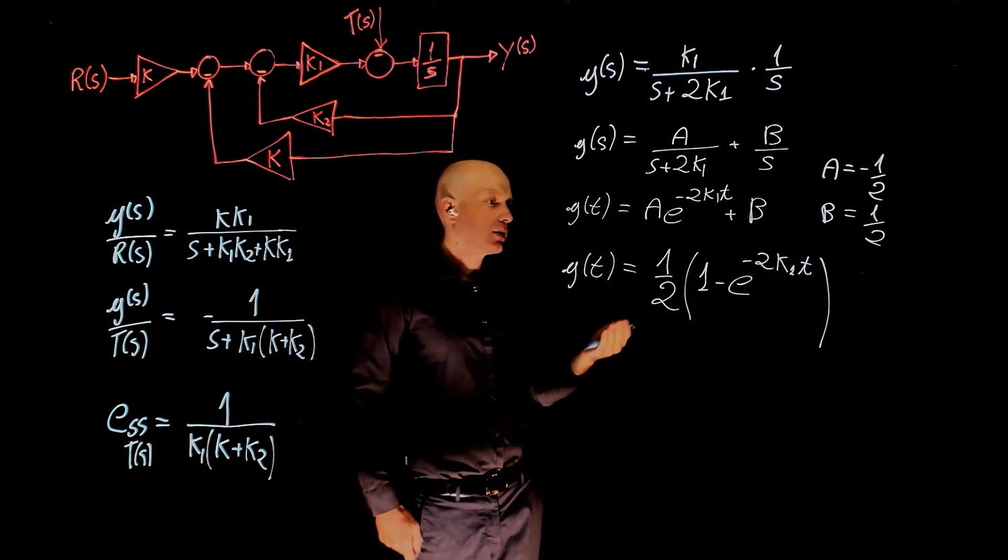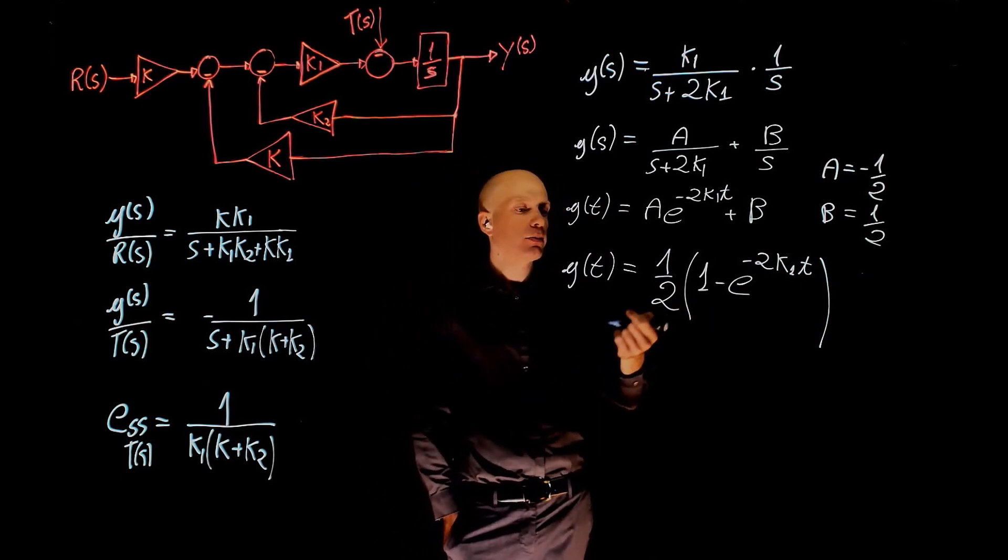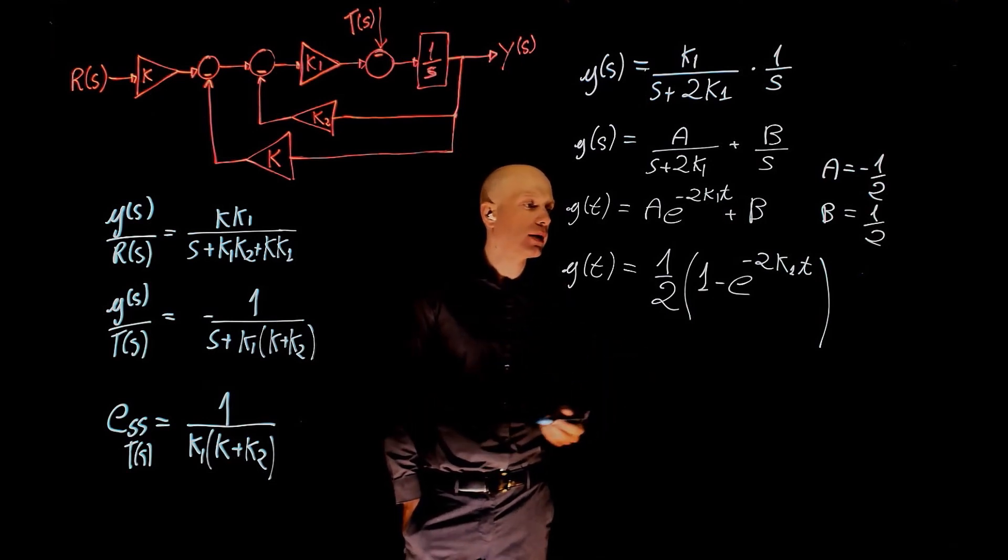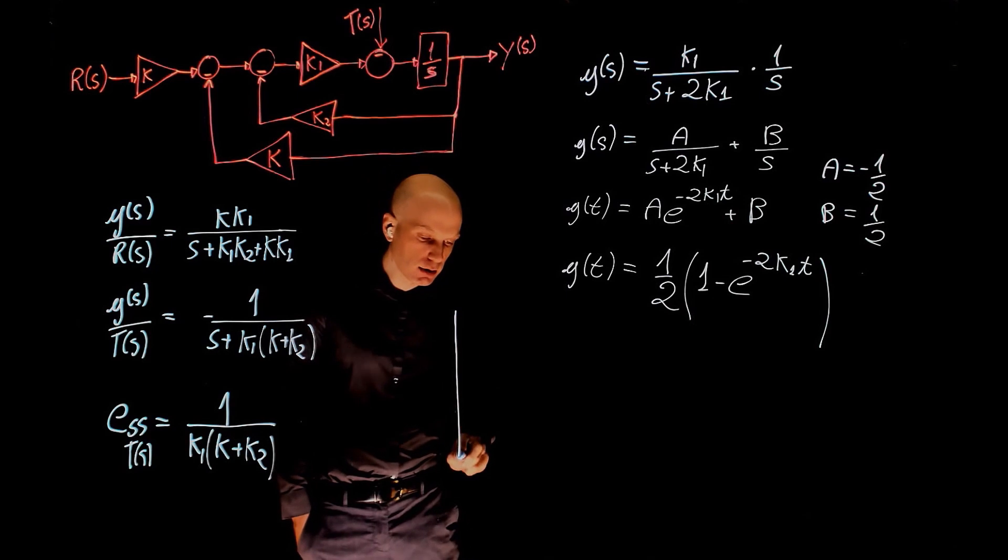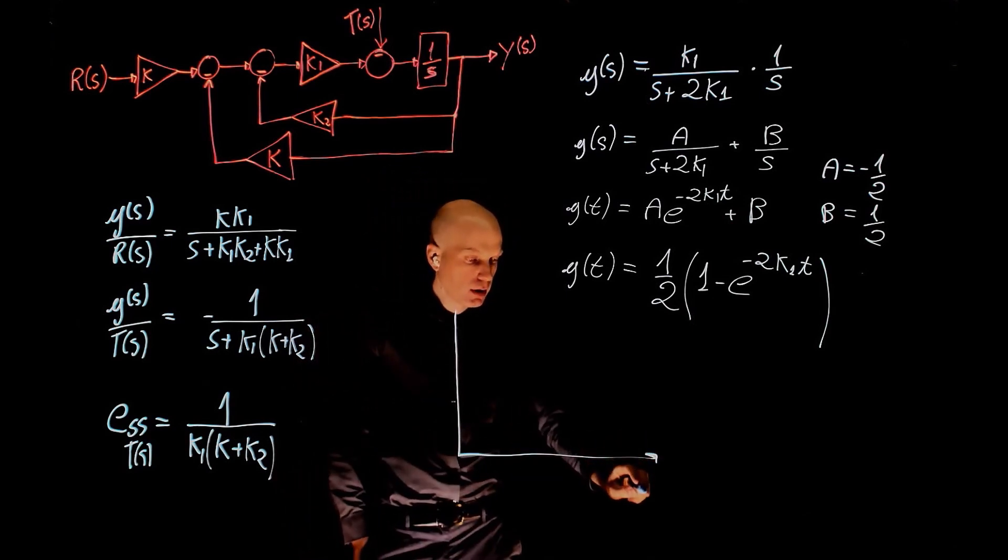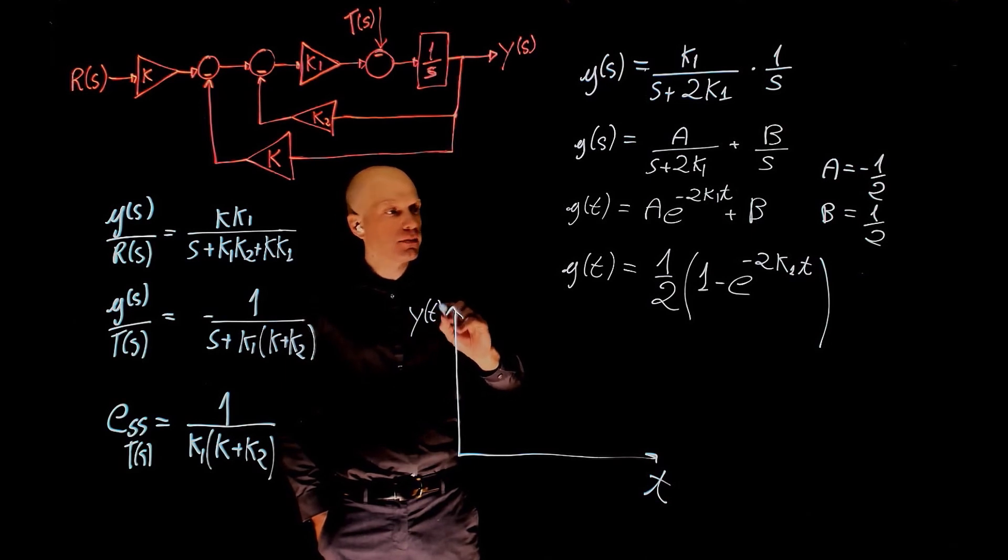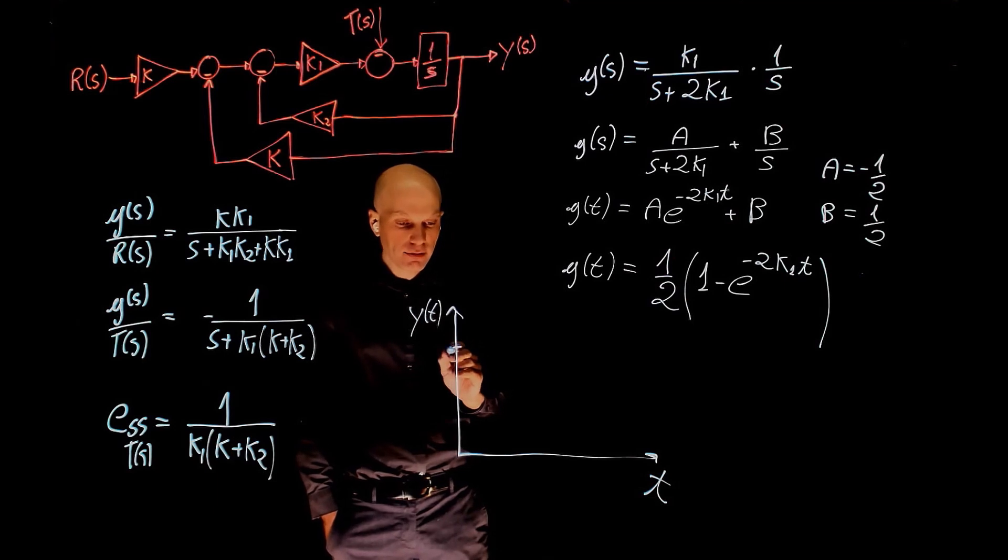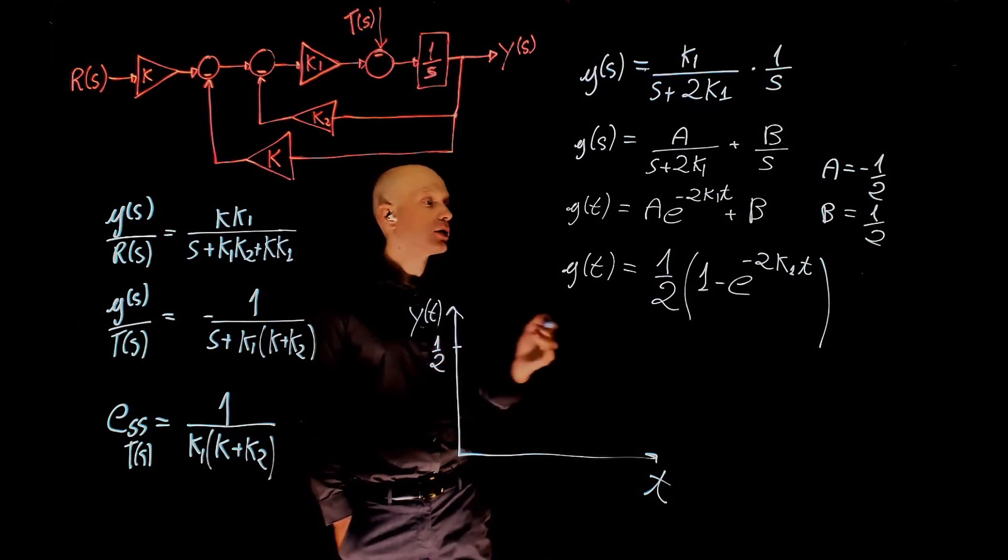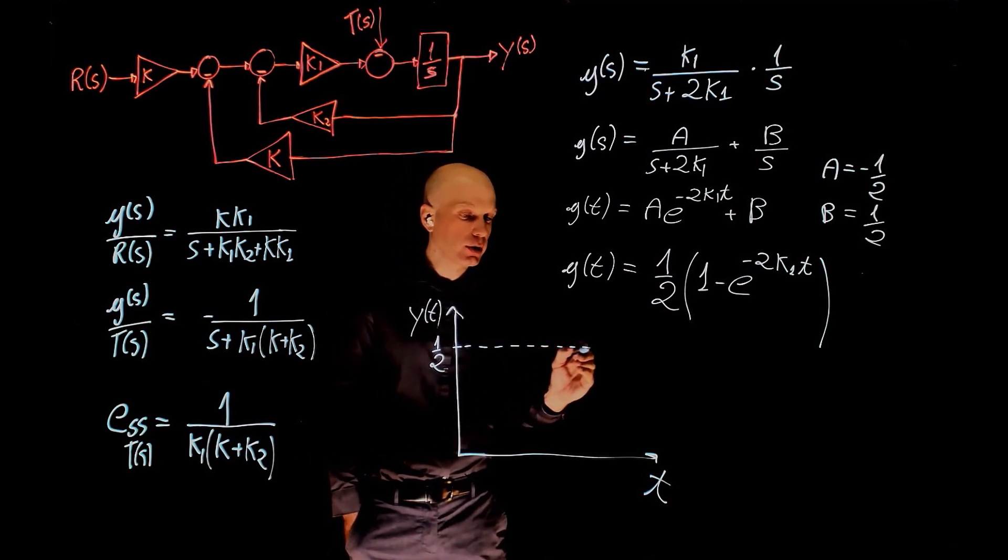The question says select k1 for the fastest response, and k1 needs to be comprised between 1 and 10. If you plot the time response of this system as time and y of t, looking at this, we know that the final value is 1 half regardless of k1. The system will converge to 1 half. The system is overdamped.